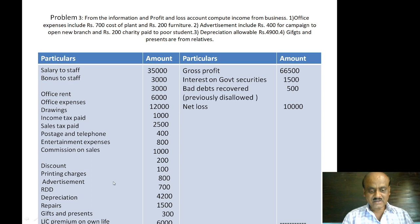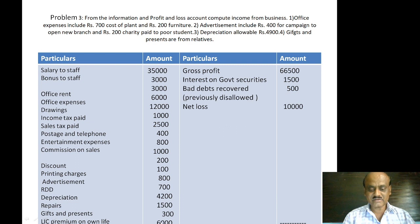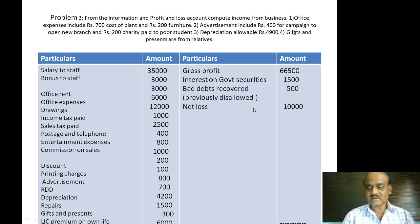Discount Rs.200, printing charges Rs.100, advertisement Rs.800, RDD Rs.700, depreciation Rs.4,200, repairs Rs.1,500, gifts and presents Rs.300, LIC premium on own life Rs.6,000. Gross profit Rs.66,500, interest on government security Rs.1,500, bad debts recovered Rs.500 previously disallowed, and net loss Rs.10,000.